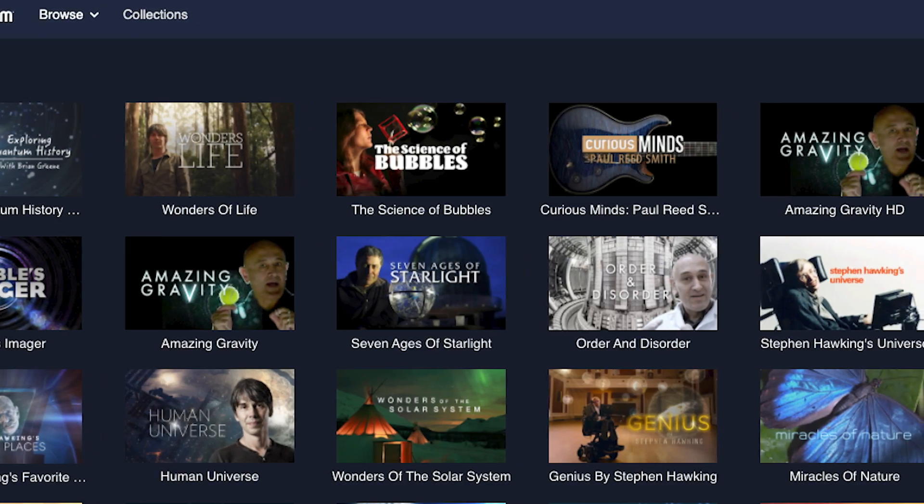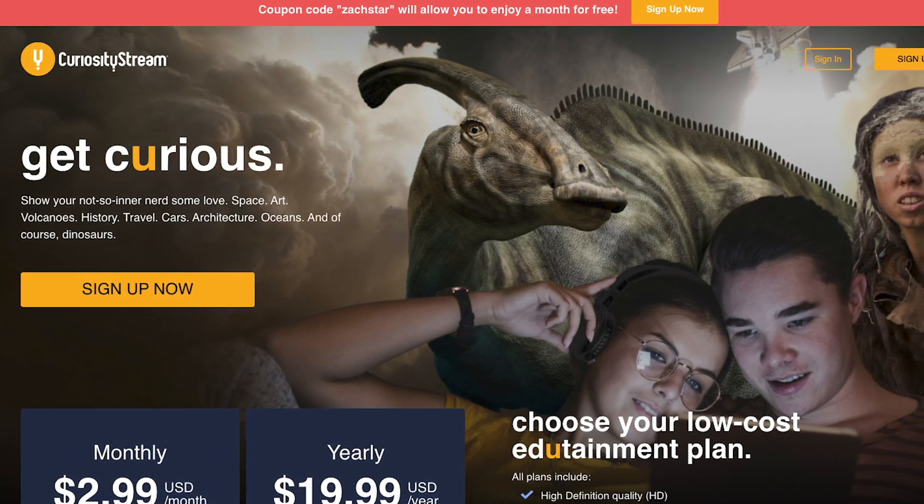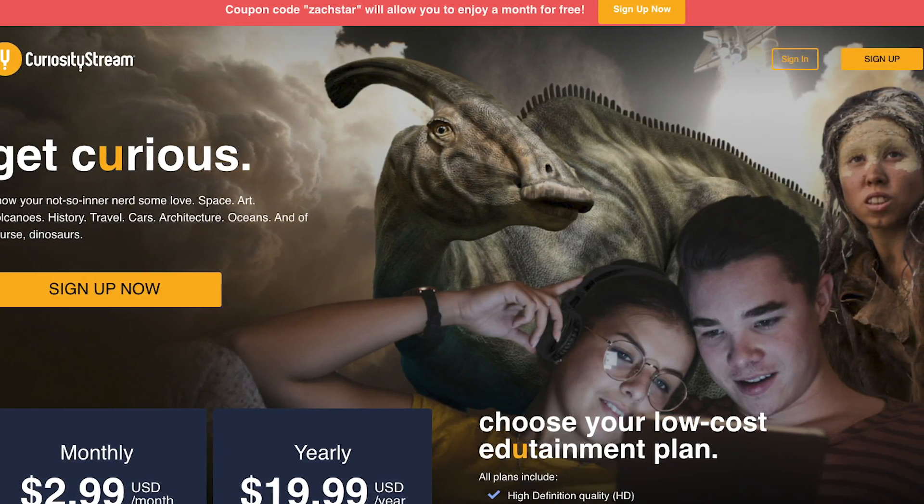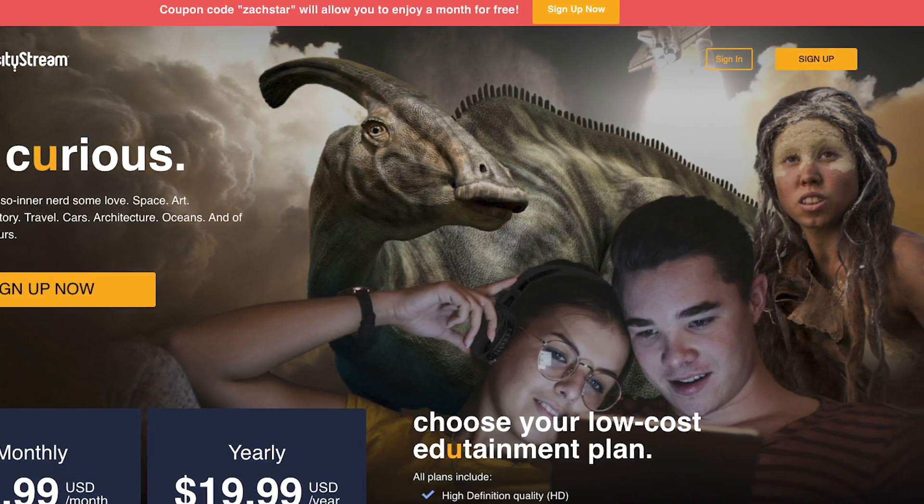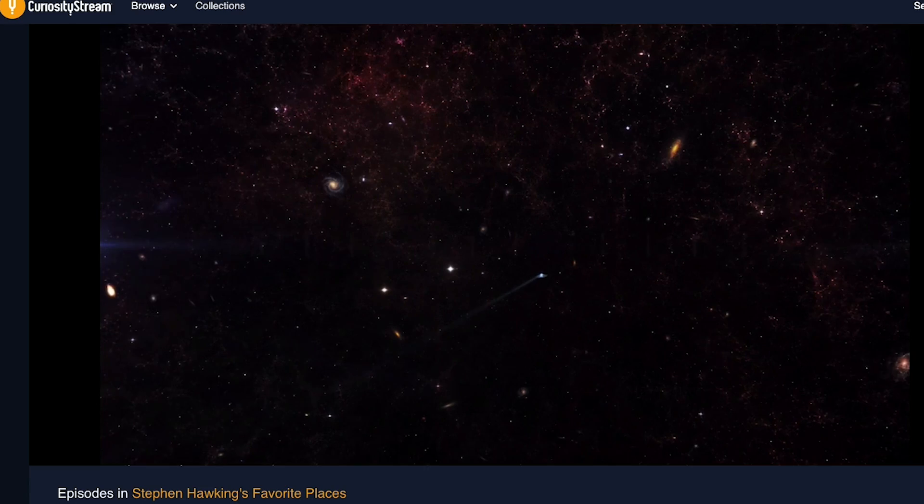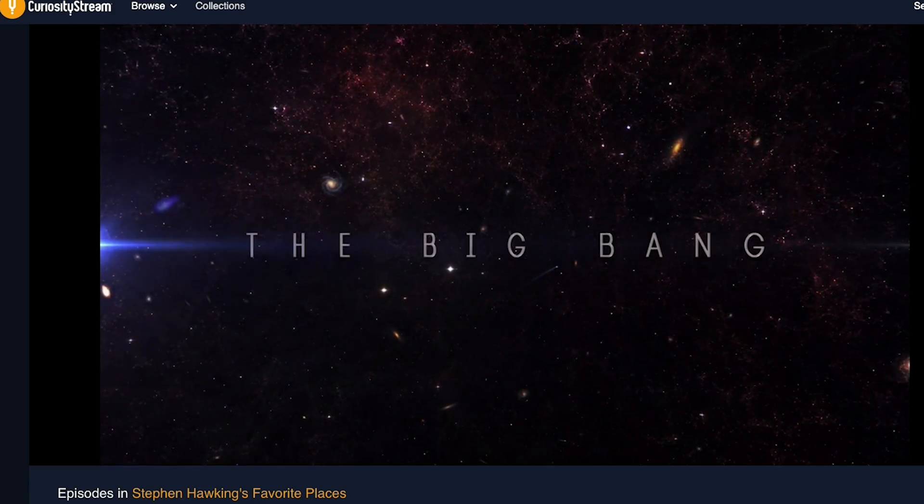CuriosityStream is available on a variety of platforms worldwide, and it only comes out to $2.99 per month, but if you sign up by using the link below, you'll get your first month's membership completely free, so no risk in giving it a try. And with this, you'll have unlimited access to top documentaries that I'm sure many of you will enjoy.